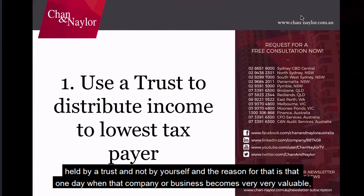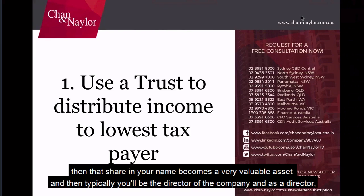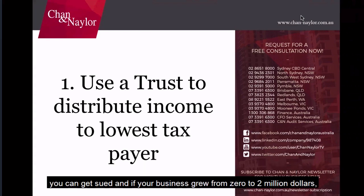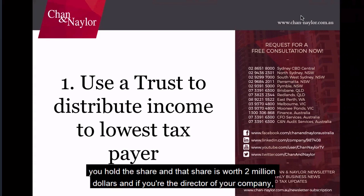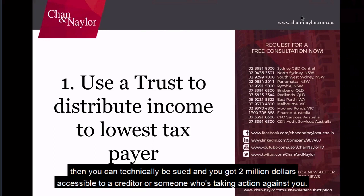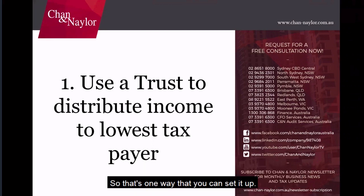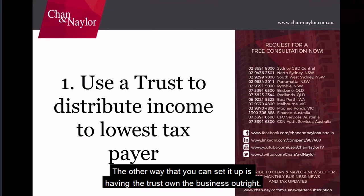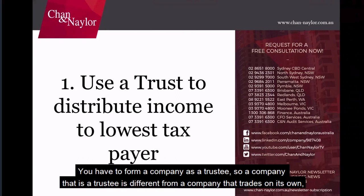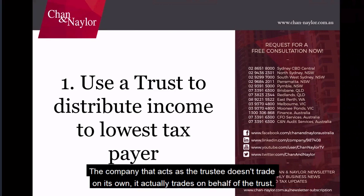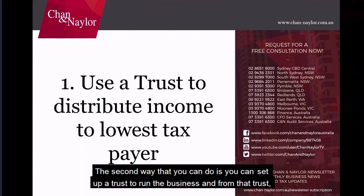When that company becomes very valuable, the share in your name becomes a very valuable asset. As a director of your company, you can get sued. If your business grew from zero to $2 million and you hold the share, that share is worth $2 million and is accessible to a creditor. The other way is to have the trust own the business outright, forming a company as trustee — a company that acts as trustee doesn't trade on its own, only on behalf of the trust.